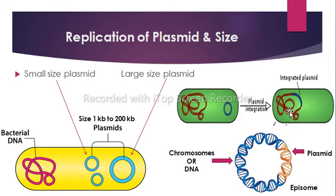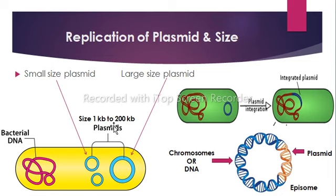Plasmids are transferred or inherited during cell division, but sometimes they are not equally transferred to daughter cells or are lost. The loss of a plasmid is called curing. The plasmid size ranges from 1 kb to 200 kb, where small plasmids are considered the desired plasmids in genetic engineering.